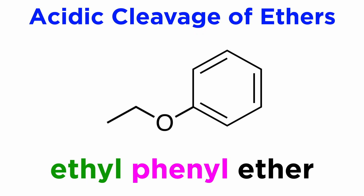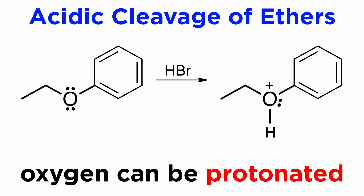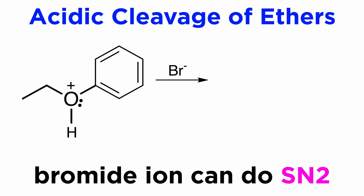Take for example ethyl-phenyl ether. If we react with something like hydrobromic acid, the oxygen will certainly be protonated, given how strong the acid is. But this leaves a bromide ion in solution, which is a reasonable nucleophile, and we have generated an electrophilic site on the starting material.